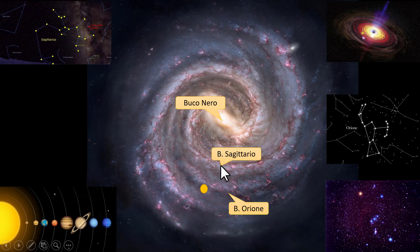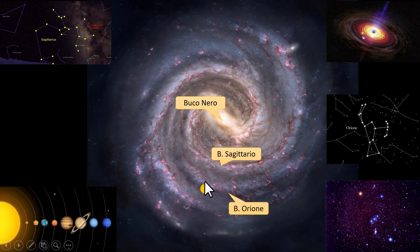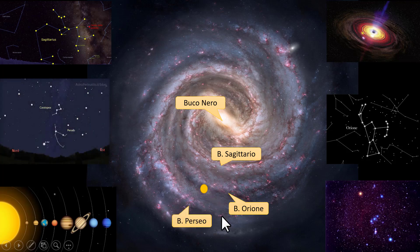Then we have the Sagittarius arm — that is, between the Orion arm and the galactic nucleus there is an arm of stardust, which is the Sagittarius arm. The Orion arm, which is the one we are in, is a branch of the Sagittarius arm, so this arm is not directly connected with the nucleus as the Sagittarius arm, but it lies between the Sagittarius arm and the Perseus arm. So we are in an intermediate arm.